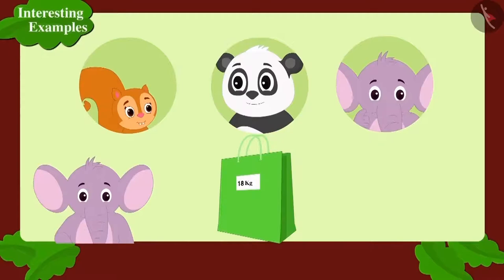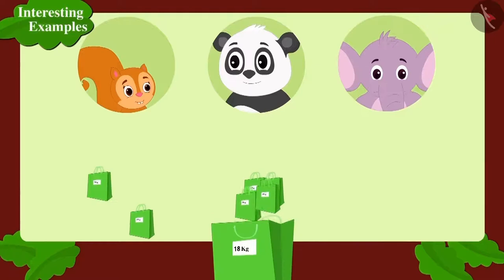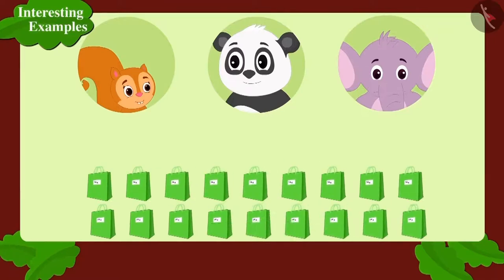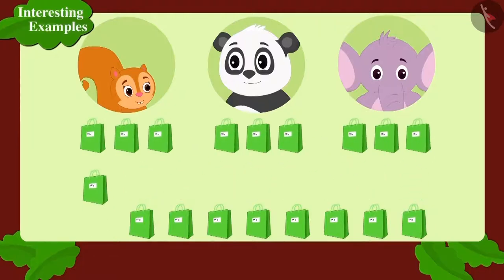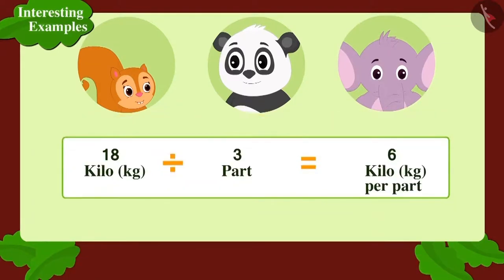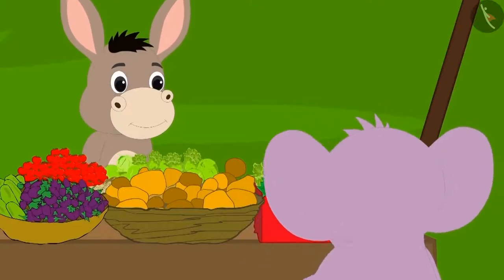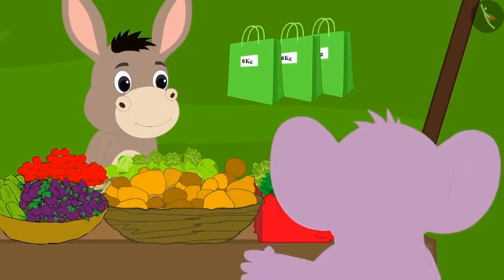Children, can you help Appu? Into how many equal parts does Appu have to divide the 18 kg potatoes? Suppose there are 18 one-kg bags of potatoes. If we divide 18 into 3 equal parts, how many potatoes will each part have? Each part will have 6 kg. Appu will have to give 6 kg each of potatoes to Chanda and Golu.